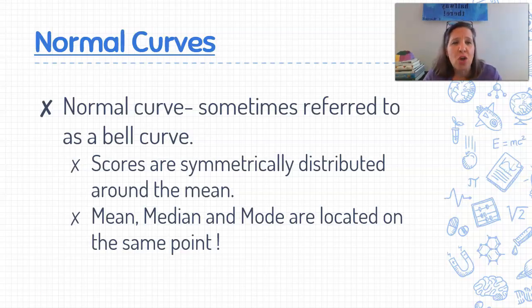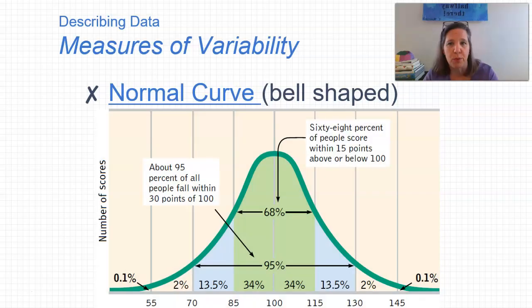Standard deviation is oftentimes represented in a normal curve. And again, this might be review for some of you, but not all of you. So a normal curve is sometimes referred to as a bell curve. And this is just where scores from a particular data set are very symmetrically distributed around the mean of our data set. In order for it to be called a normal curve, for it to have that name, the mean, the median, and the mode all have to be located at the very same data point. And I'm going to give you an example here.